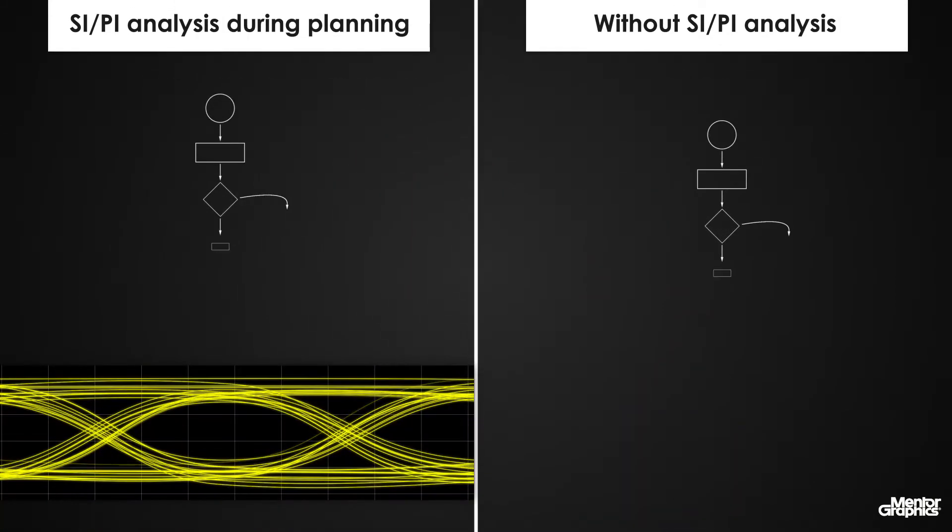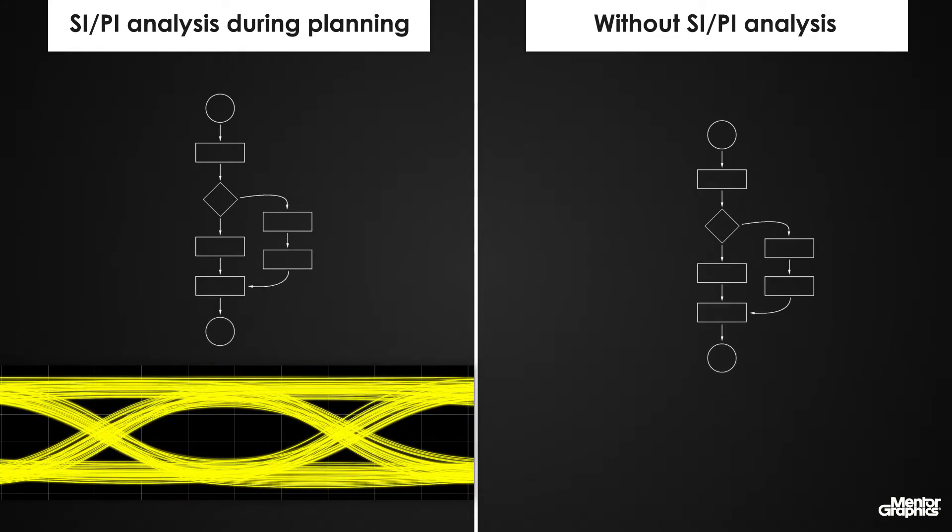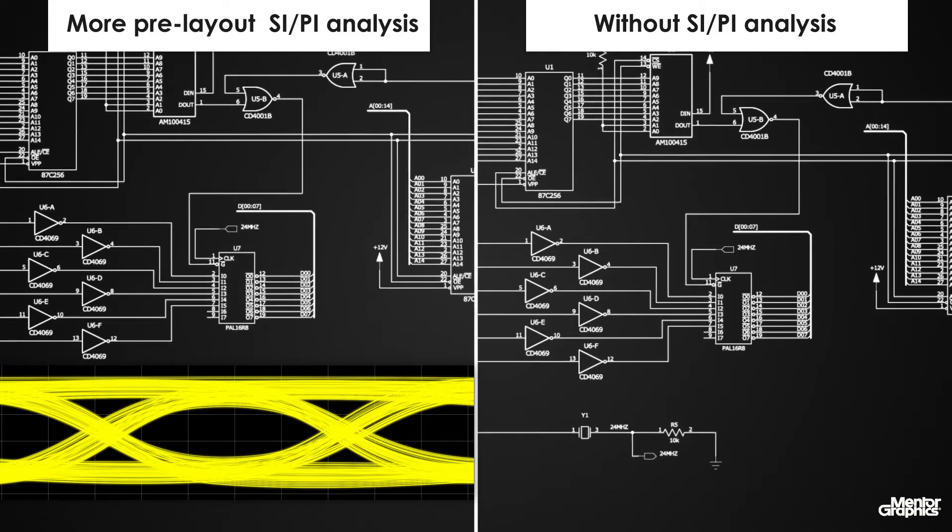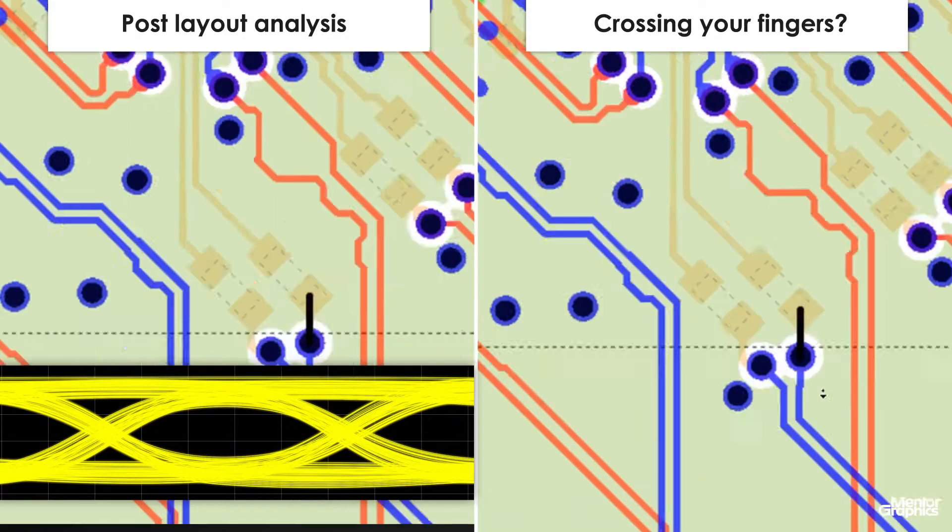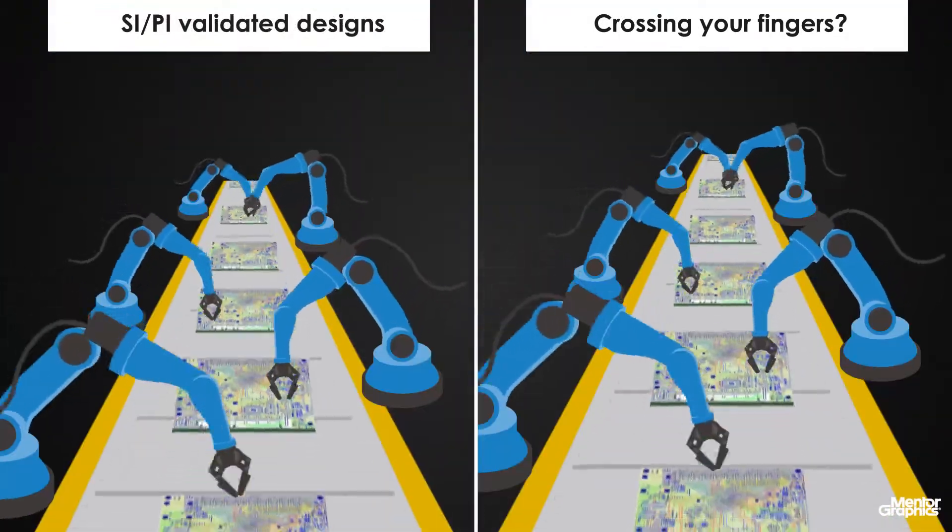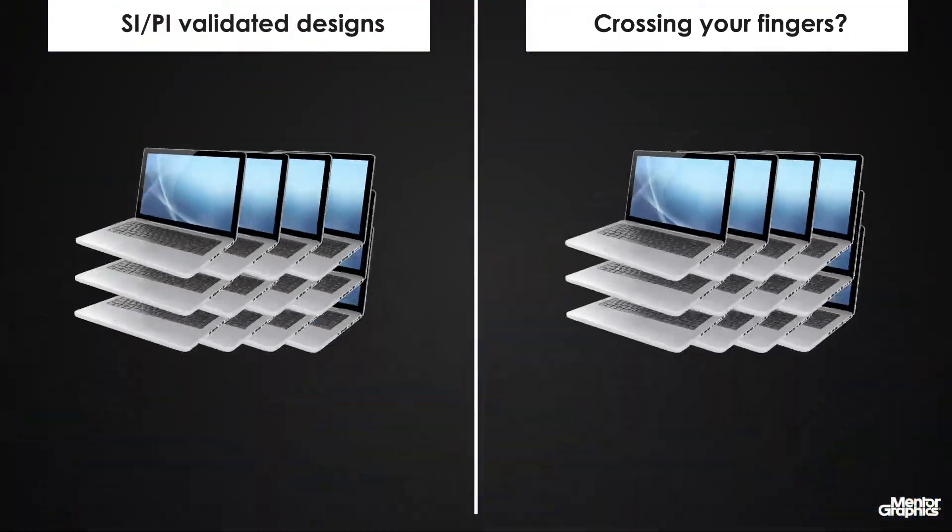With Hyperlinks, you can run signal and power integrity analysis from the design planning phase, throughout the design process, and in the post layout stage, to ensure that your products can be manufactured and work as intended in the field.